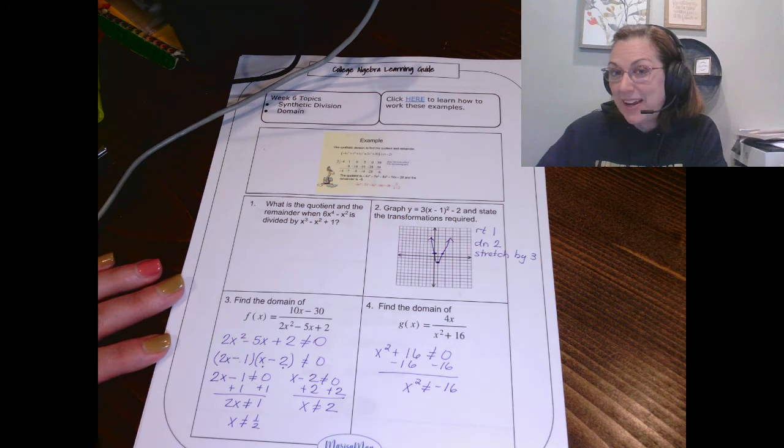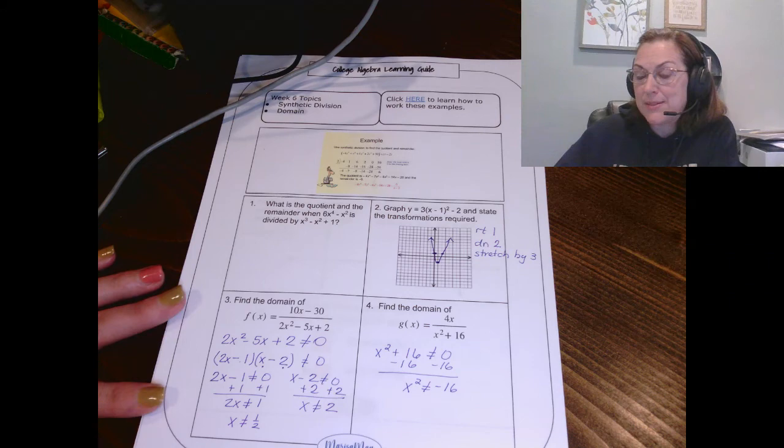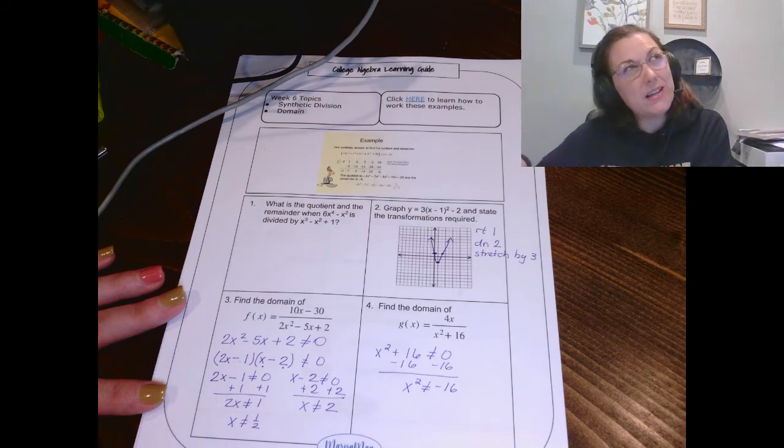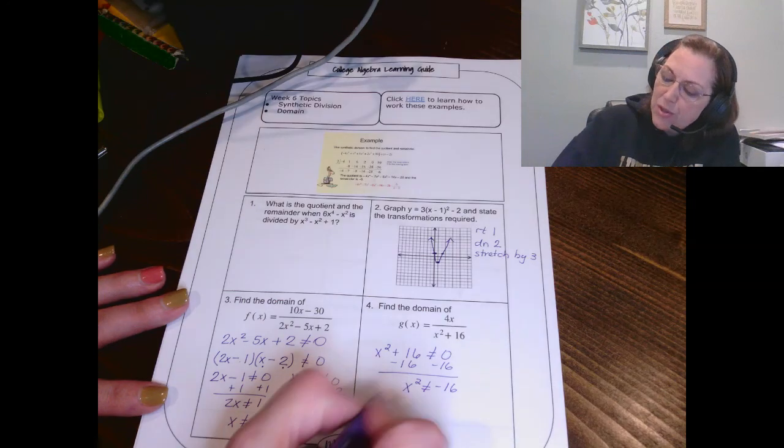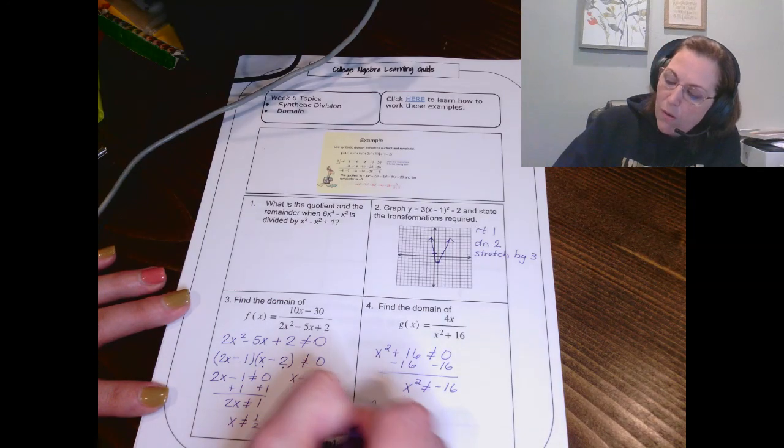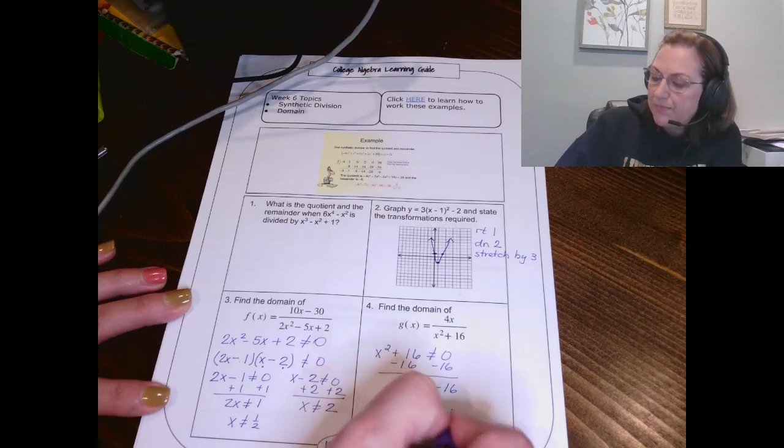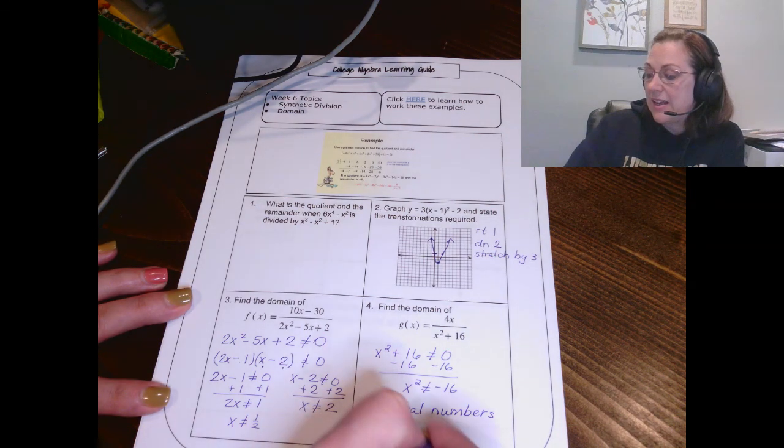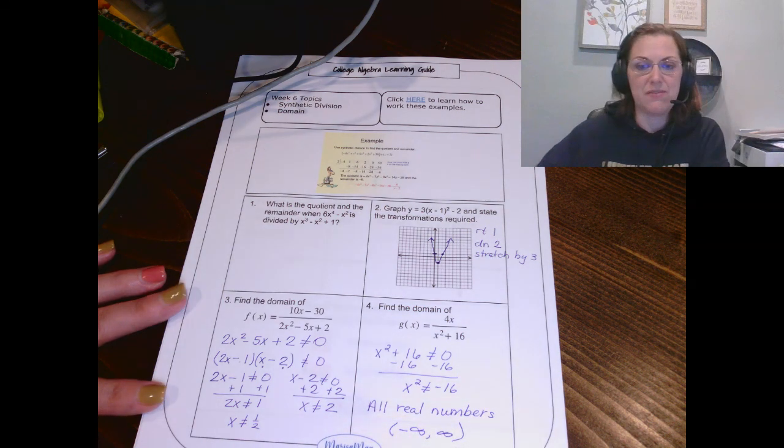That's not happening, right? x squared is going to produce a positive value. So there's no way that could equal a negative 16. This simply means you don't have any excluded values in your domain. Well, if you don't have any excluded values, that means that any value would work. And so the way we say that is that the domain is all real numbers. Now, if we're looking to write that in interval notation, you definitely can do that by saying that the domain begins at negative infinity and it ends at positive infinity.